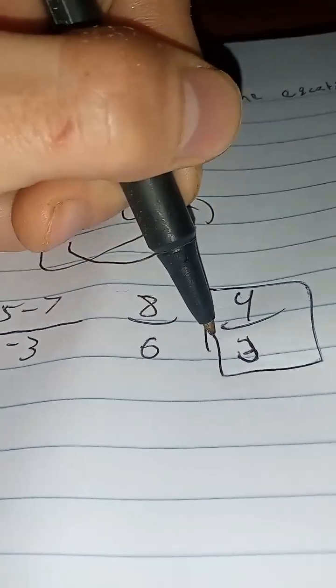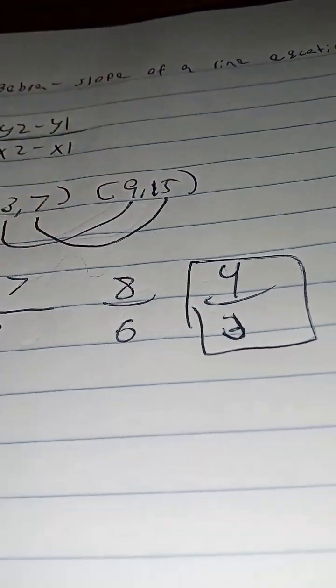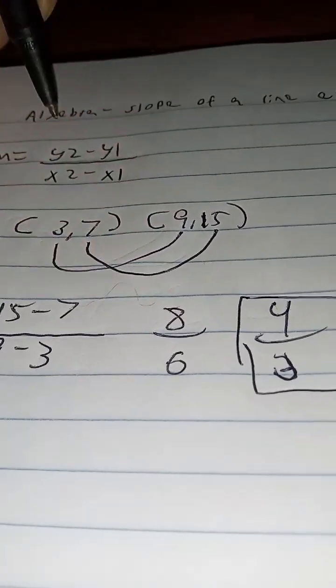So that's your answer right here. It's 4 over 3. And I'm sorry for my handwriting. But just remember the formula right here.